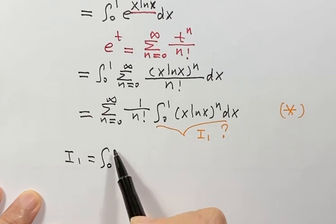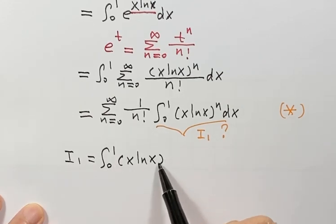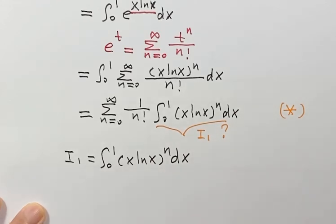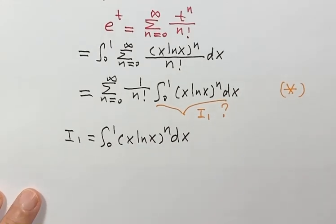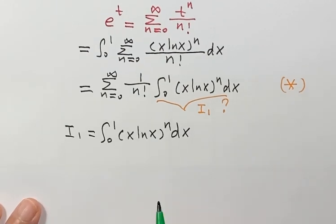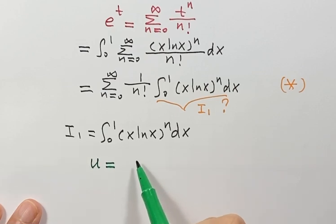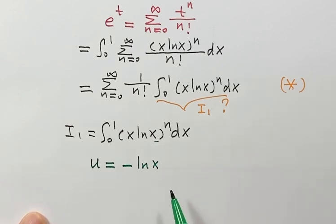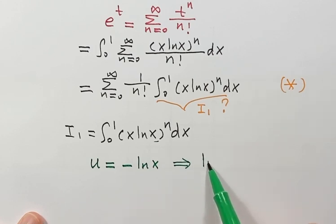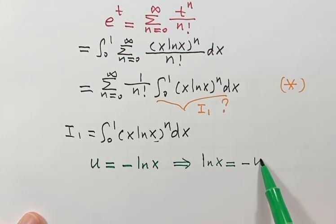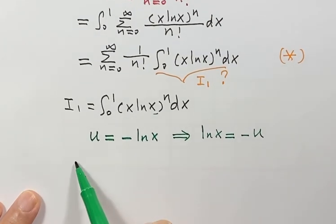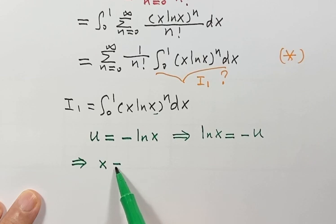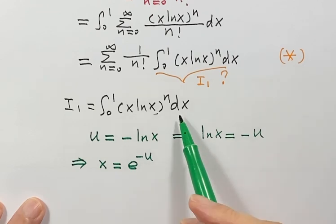So I1 is the integral from 0 to 1 of x times natural log x to the power n. To solve this, we are going to do a substitution. Let u equal to negative natural log x. Then natural log x equals negative u, and based on the definition of log, x equals e to the power negative u.